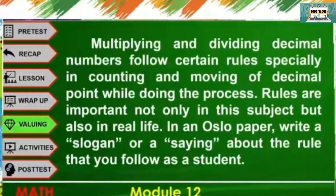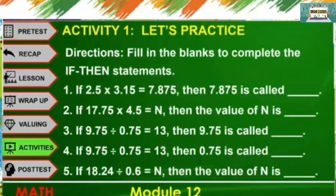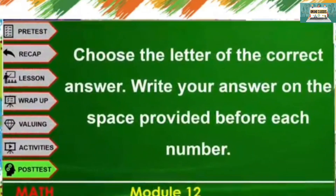For our value link: multiplying and dividing decimal numbers follow certain rules, especially in counting and moving the decimal point. Rules are important not only in this subject but also in real life. On an Oslo paper, write a slogan or saying about a rule you follow as a student. For your differentiated activities, kindly refer to the given module. Let's have a post-test — choose the letter of the correct answer and write your answer on the space provided before each number.